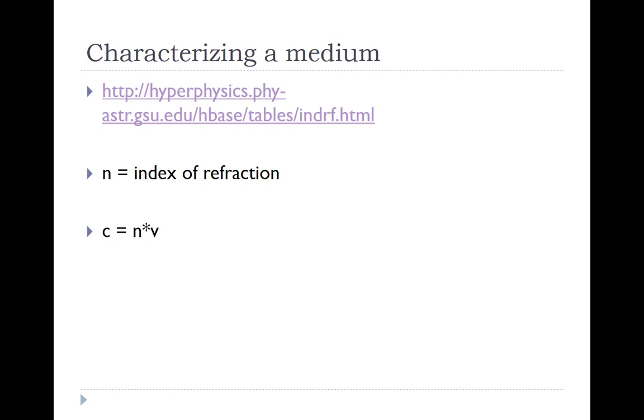The index of refraction is a number used to characterize a medium. The bigger the number is, the slower light or electromagnetic waves travel through that medium. The symbol N is used for the index of refraction. And V is the speed in the medium.